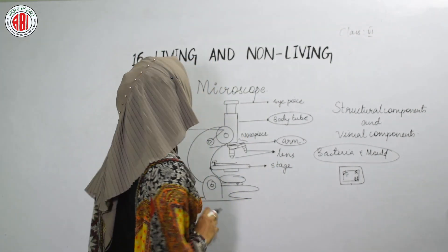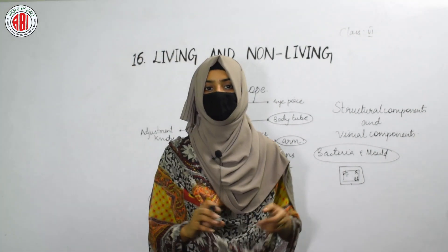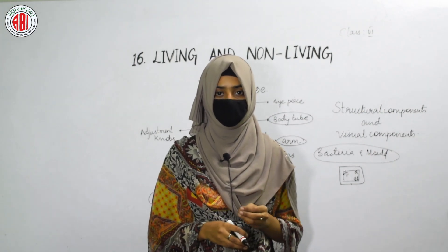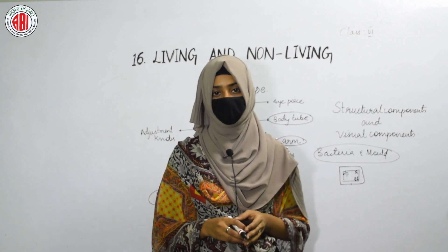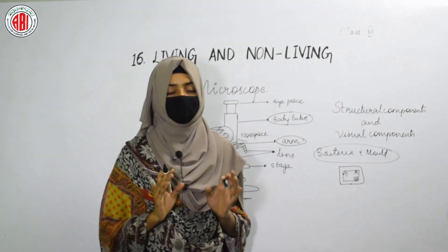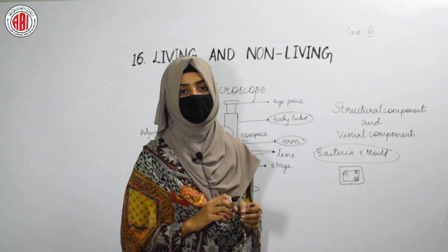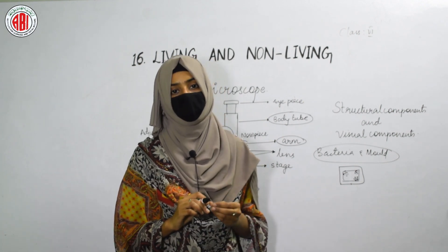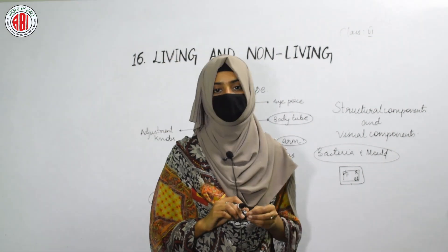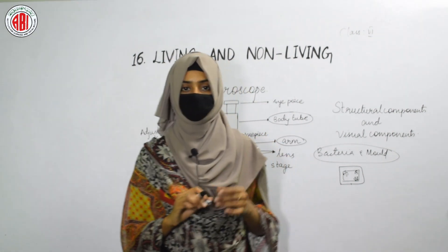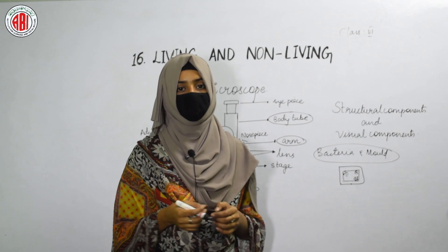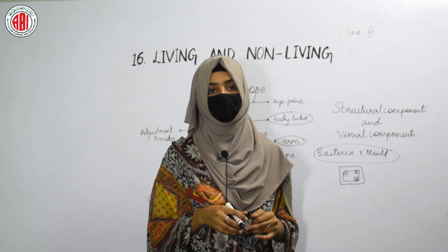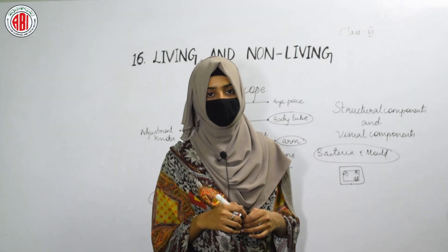In this lesson on living and non-living, we have discussed the different living things and the characteristic features shown by them, as well as non-living things. We discussed characteristics shown by plants, microorganisms as tiny living organisms viewable through a microscope, and the different components that form the structure of a microscope. Here the lesson living and non-living ends. That's all for today. Thank you.